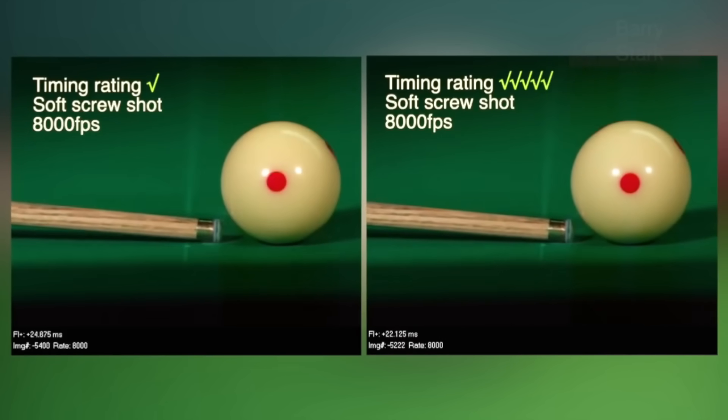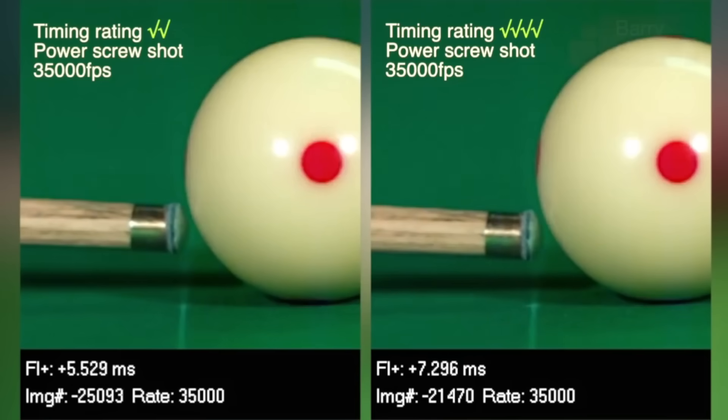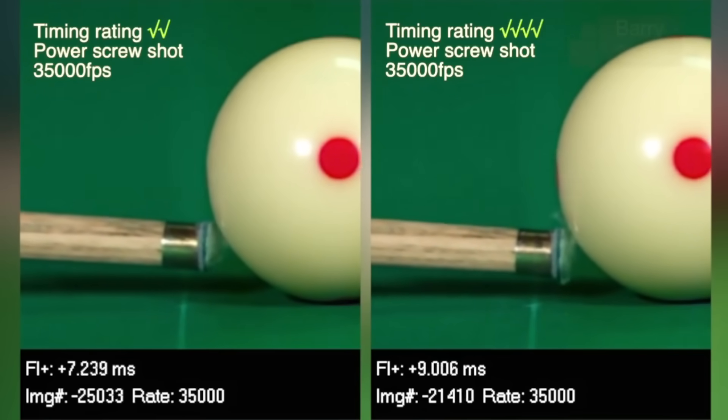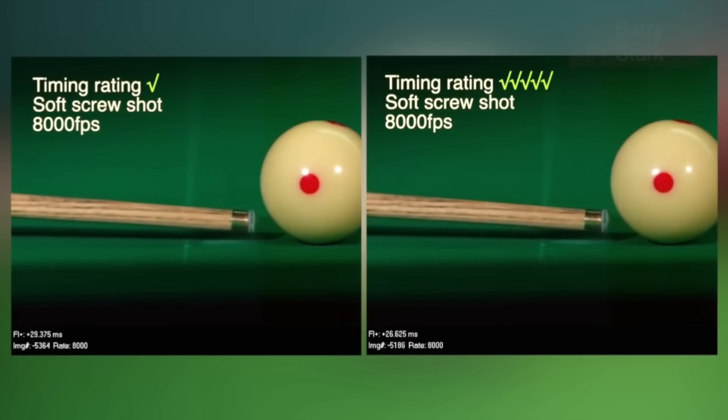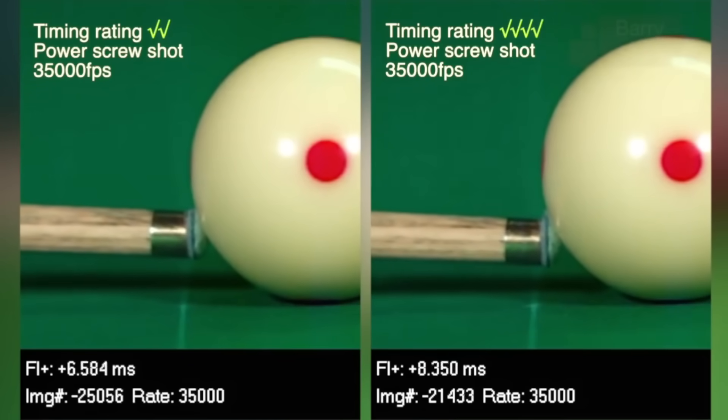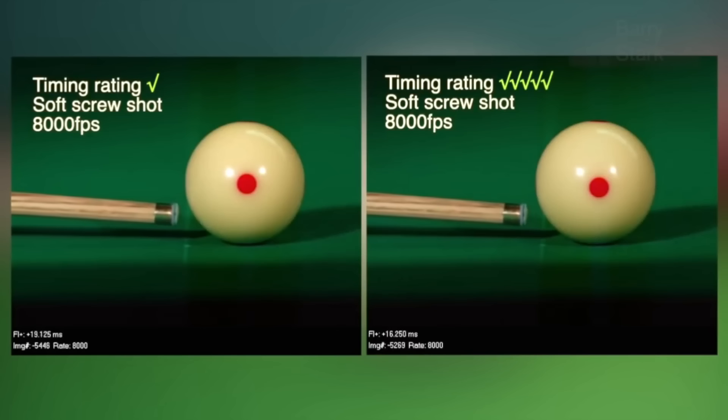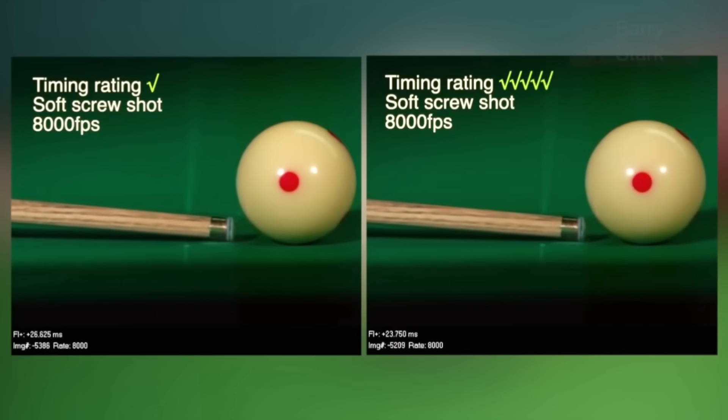Barry showed slow motion video comparing pro player shots with both good and bad timing as judged by the player. Unfortunately, care was not taken to control variables like cue speed and tip offset from center, both of which can affect tip contact time. Also, there were no definitive measurements.